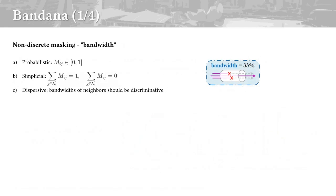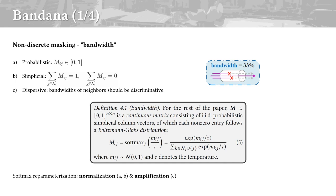Based on these understandings, our non-discrete masking is designed to reach three conditions: probabilistic, simplicial, and dispersive. Sampling mask values, or bandwidths, from a continuous Boltzmann-Gibbs distribution meets these conditions perfectly, because the Softmax operator plays a dual role of normalization and amplification.